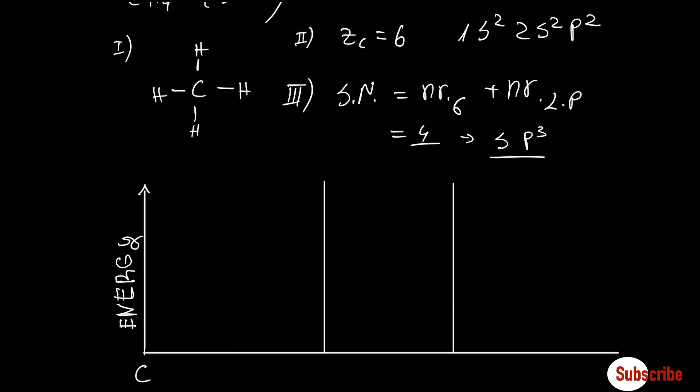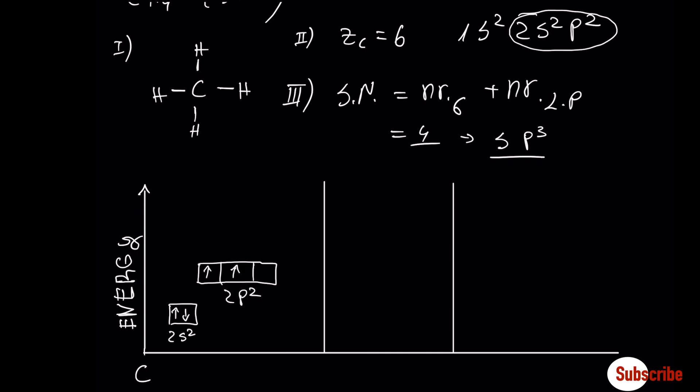We are going to use only the outermost electrons, the valence shell. We can see here that carbon is capable of forming only 2 bonds, with 2 unpaired electrons in the p orbitals. But in our compound, it has 4 bonds.